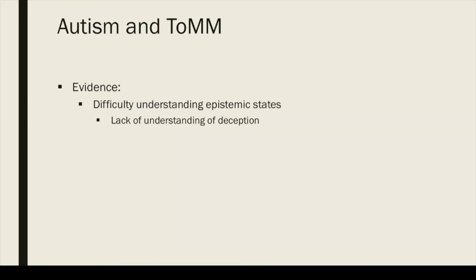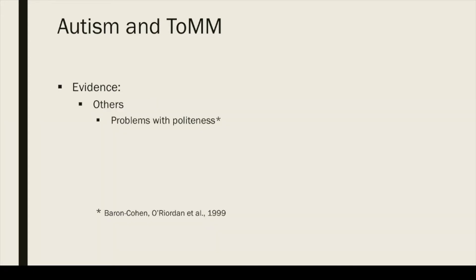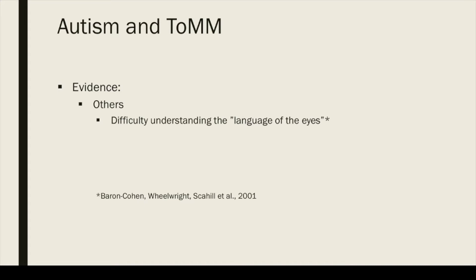Moreover, deception is easily understood by the typical four-year-old child, but children in the spectrum tend to assume everybody is telling the truth, and may be shocked by the idea that other people may not say what they mean. Autistic children also have problems understanding politeness. The typical nine-year-old can figure out what might hurt another's feelings, and what might therefore be better left unspoken. Children with Asperger's syndrome are delayed by around three years in this skill, despite their normal IQ. The typical nine-year-old can also interpret another person's expressions from their eyes to figure out what they might be thinking or feeling, whereas autistic children tend to find that more difficult.